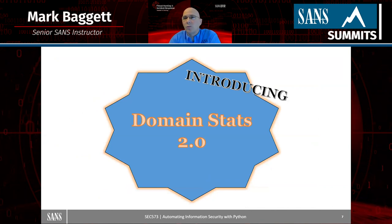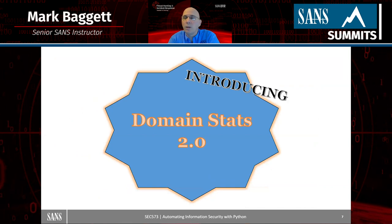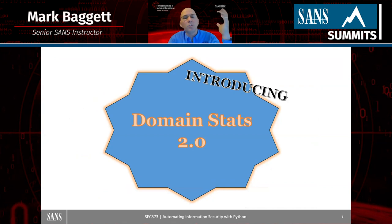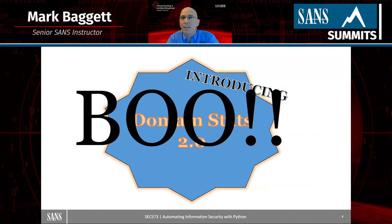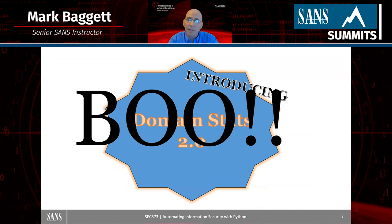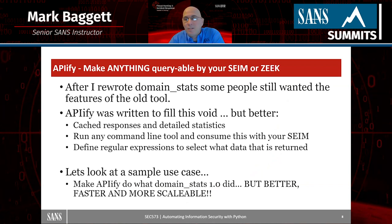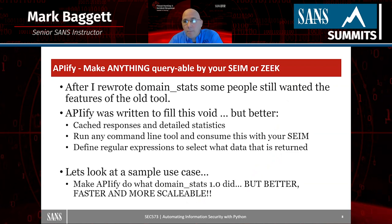Domain Stats 1.0 queried things on the back end, cached the data, and worked okay, but again the only thing people used it for were domain creation dates. So I rewrote it focusing on those creation dates in Domain Stats 2.0, published it on my GitHub page. The reaction from the community was overwhelming — 'Oh boo, can we get the old tool back?' It had so many performance issues I just didn't want to continue supporting it. So I released a tool called APifi.